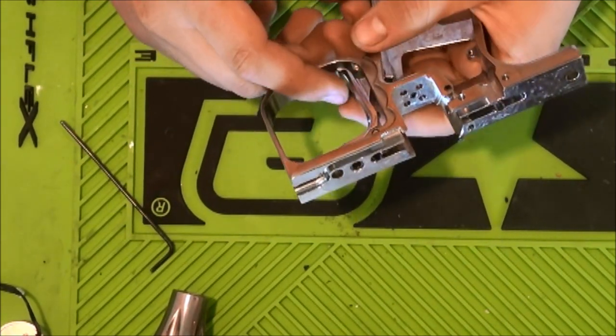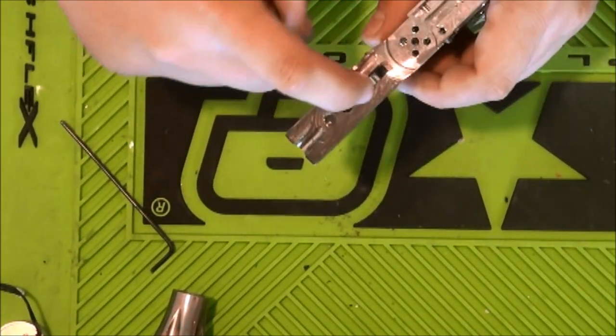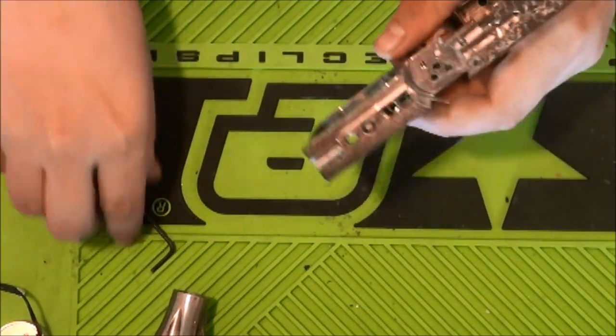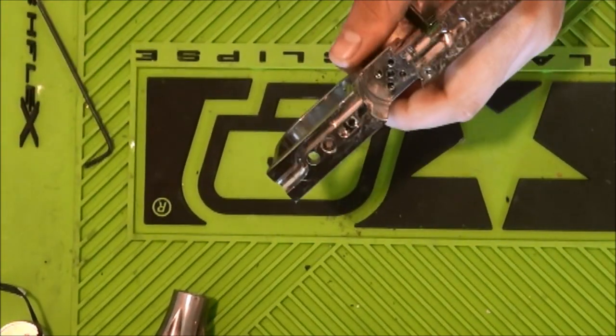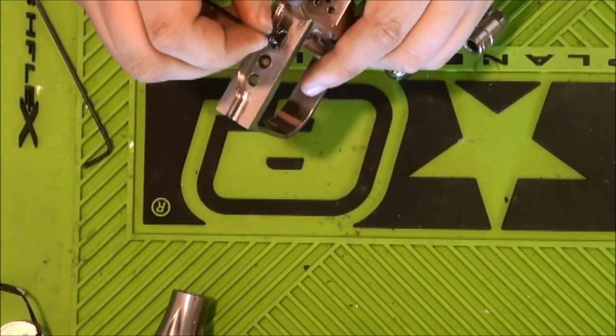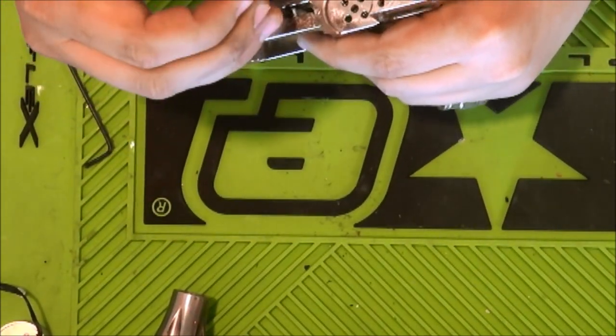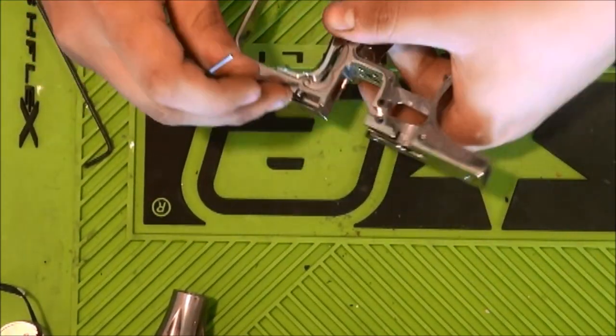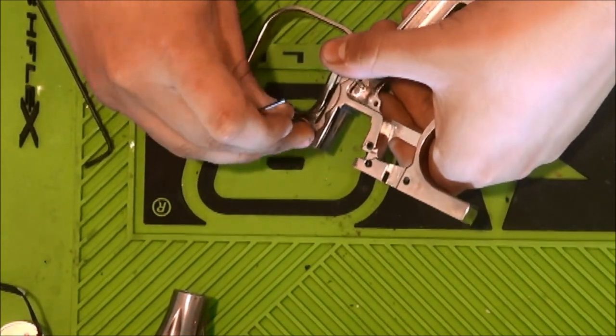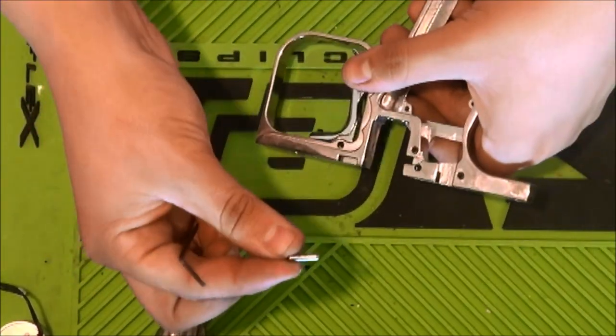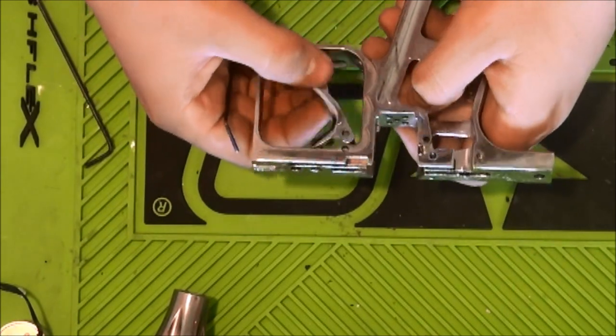So to take the trigger out, just like with the sear, we have to loosen up one screw and then push the pin out. There's the pin, and now the trigger's loose.